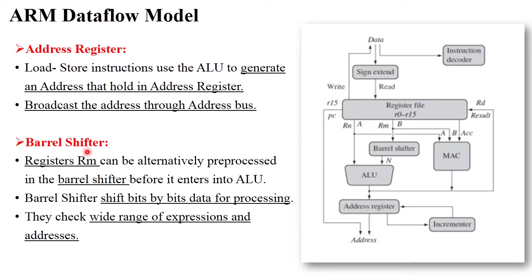The next component is the barrel shifter. The main work of the barrel shifter is to shift bit-by-bit data for processing. The processor understands binary language — that is, the 0 and 1 format. For example, the operation 2 plus 2 — 2 in binary is 0010. These operations are sent to the barrel shifter, which shifts 1 bit at a time, checks that the data is 32 bits, and then sends it to the ALU.